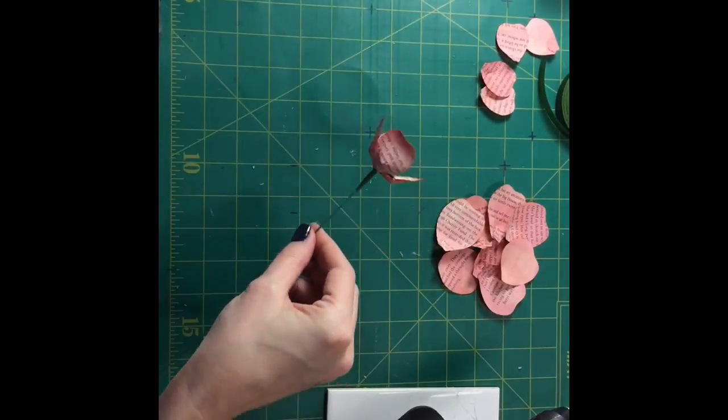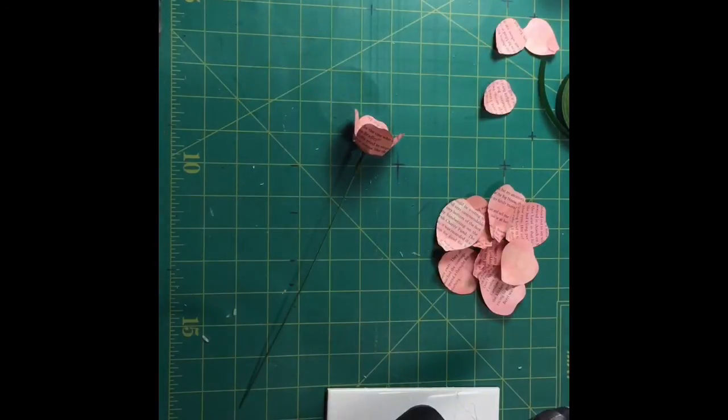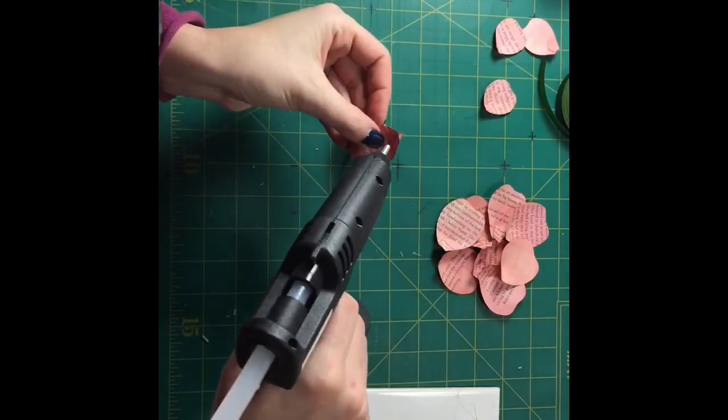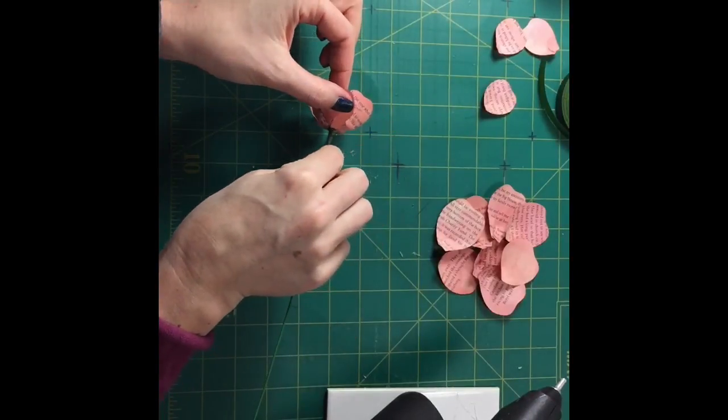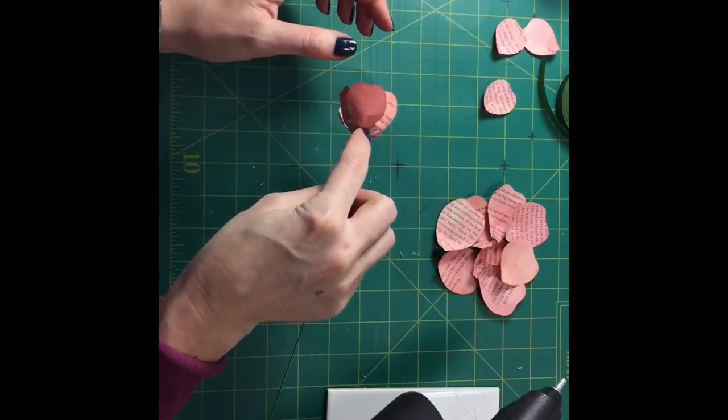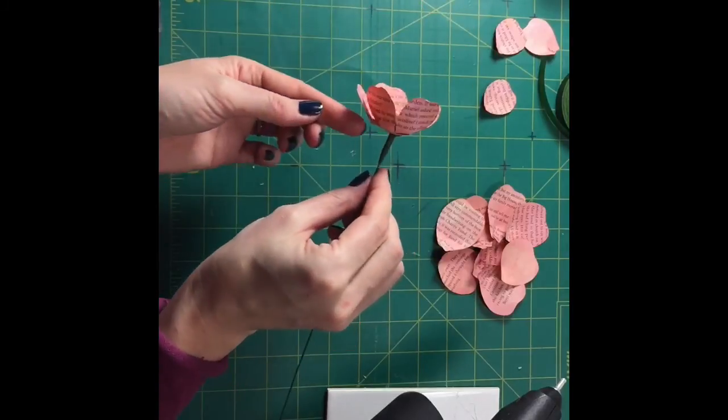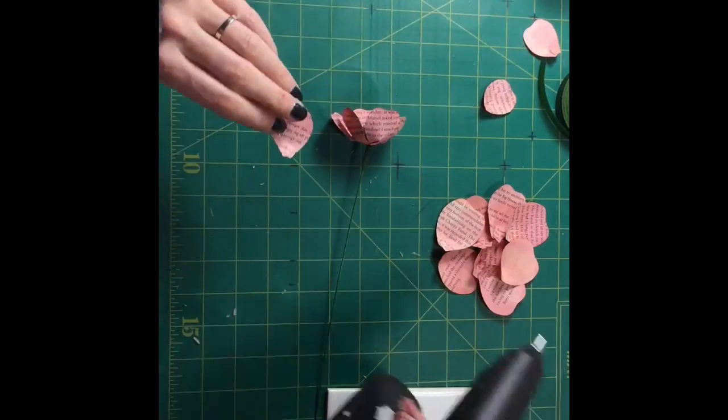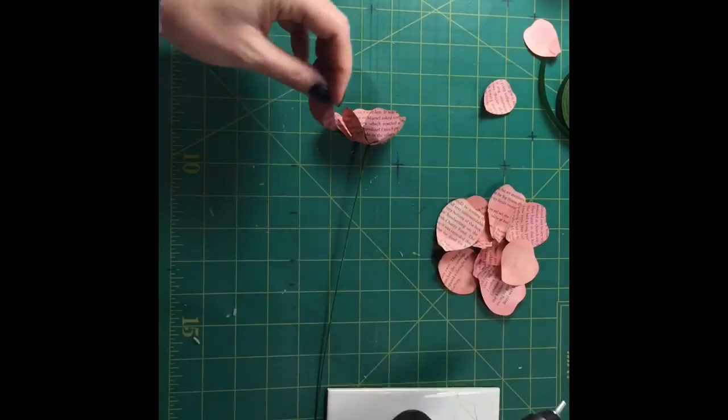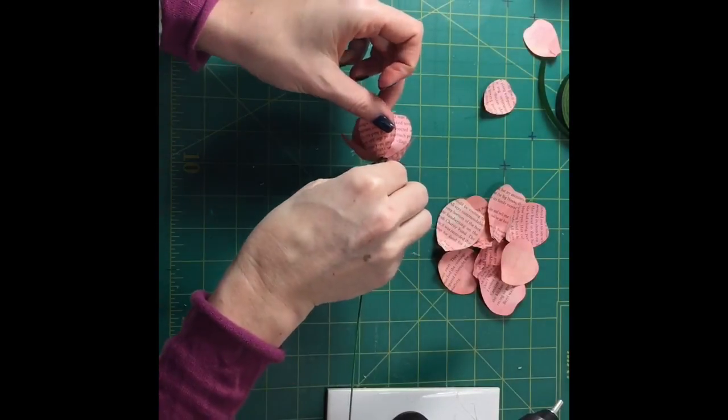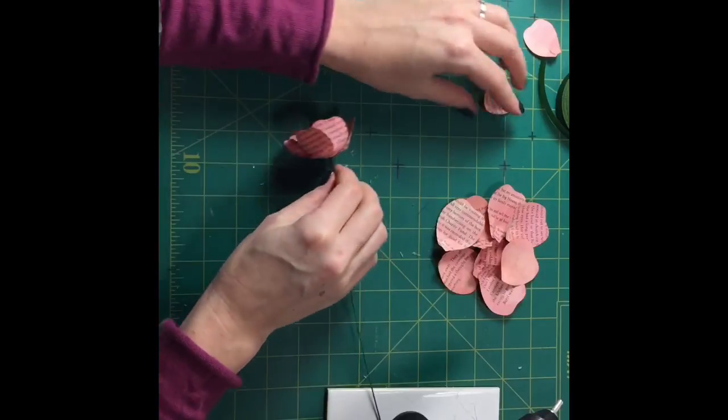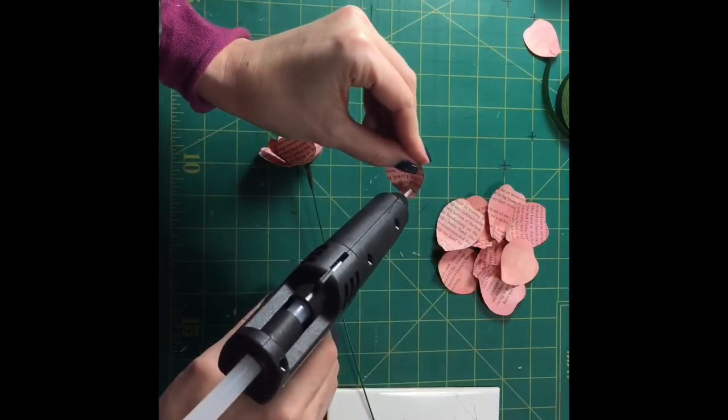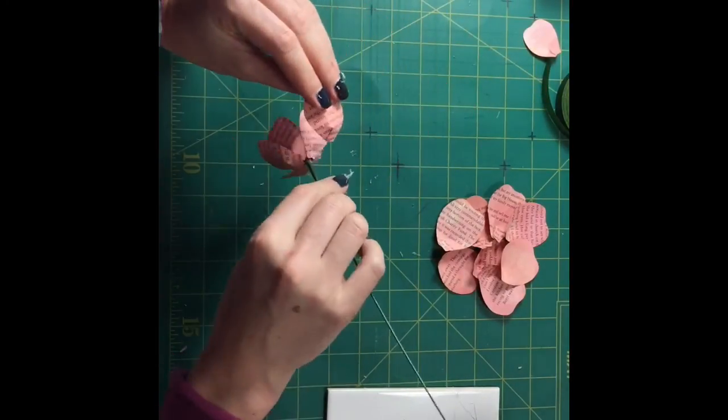And then we do the second layer but we do them offset so we put them in between these. See? So that they're in between and then you just continue on. Putting them in between. Now if you want a bigger flower you can come out with your petals from here if you want your flower to be more open so to speak.